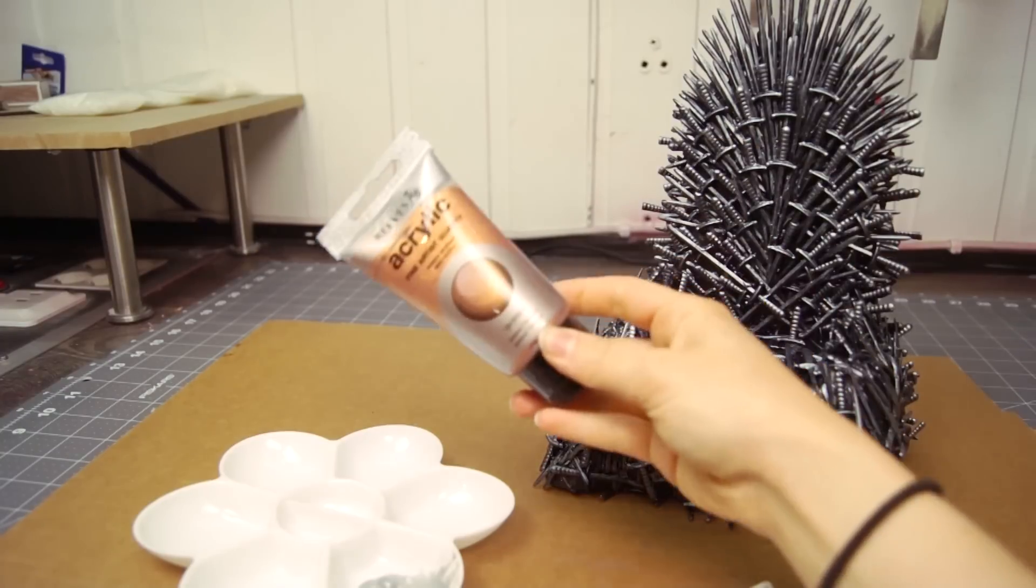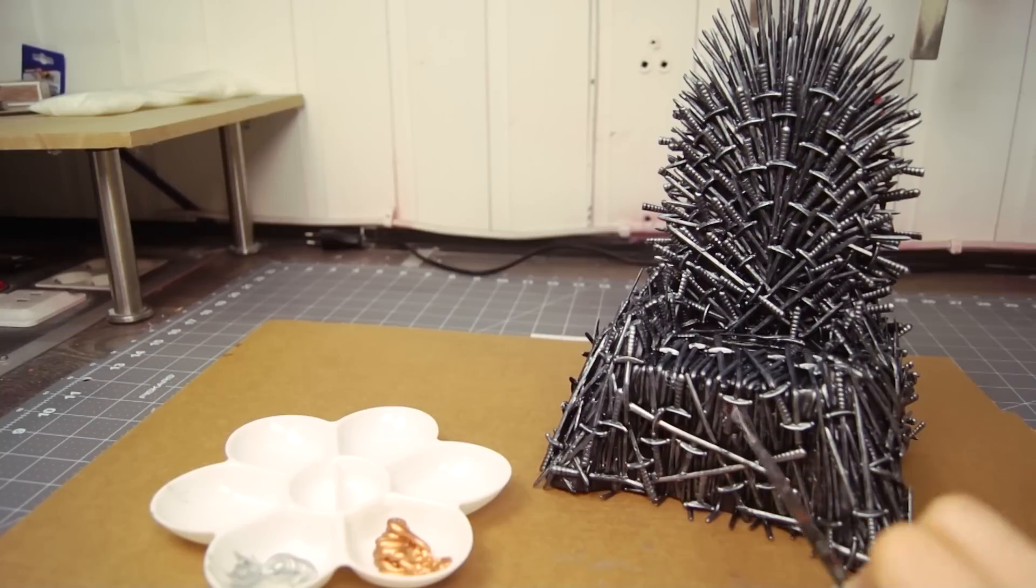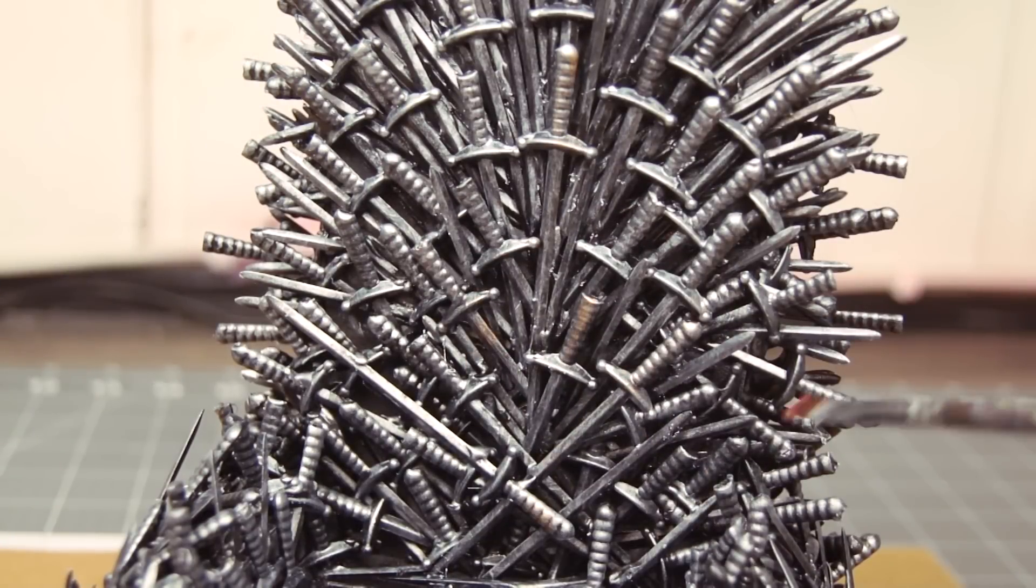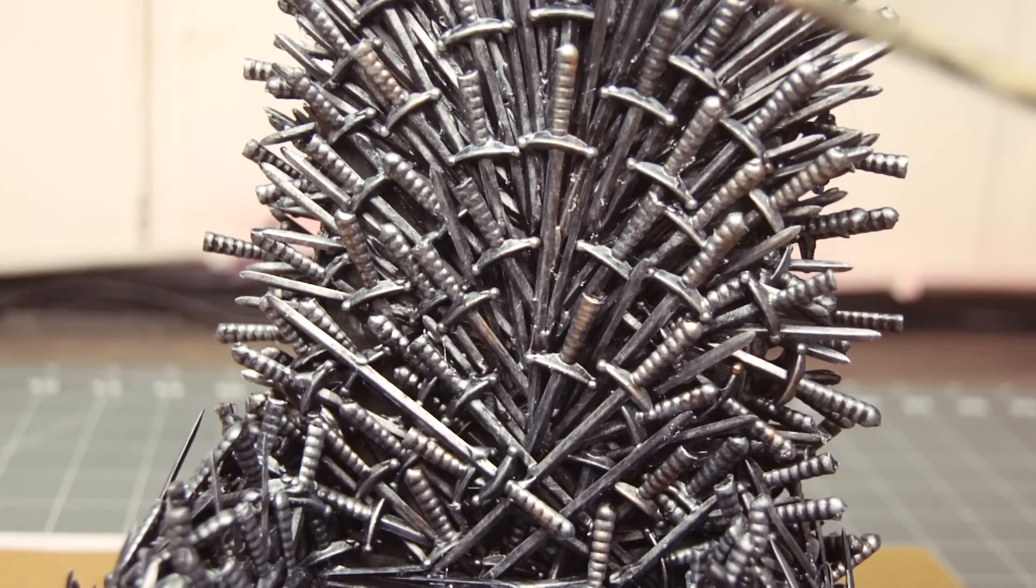I probably could have left it with just the silver coat but I decided to use some bronze acrylic paint to create some extra depth. I was very careful not to use too much of this. I added a few spots here and there because too much would ruin the whole iron look.